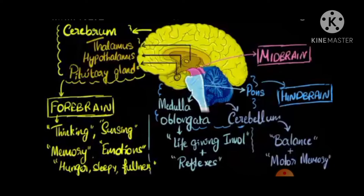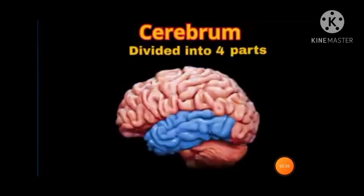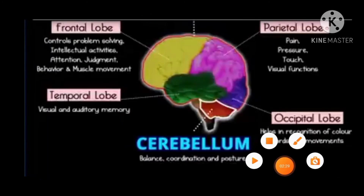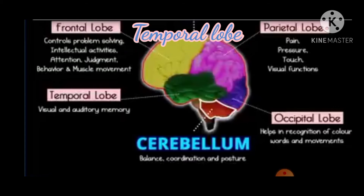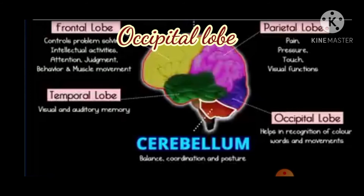In the forebrain, the cerebrum makes up 85% of the part. The cerebrum is divided into four parts known as lobes. The four lobes are: the frontal lobe, parietal lobe, temporal lobe, and occipital lobe.